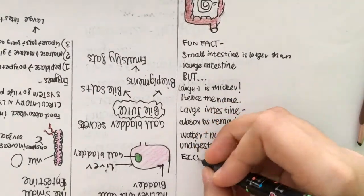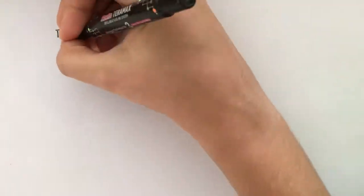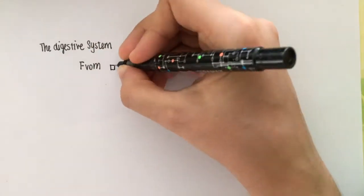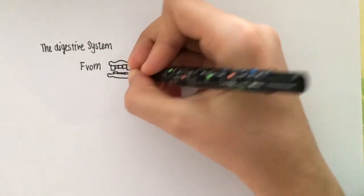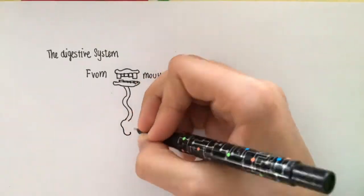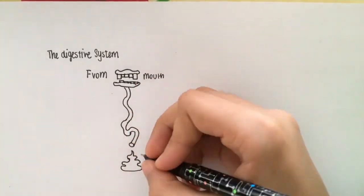The undigested food is stored in the rectum, and then it goes to the anus where it is excreted. So the whole digestive system, from the mouth all the way down to the anus, is known as the alimentary canal.